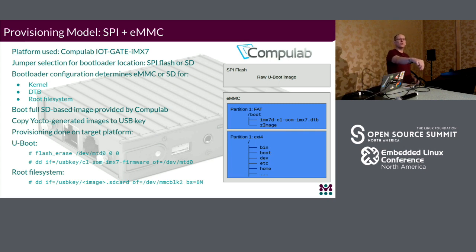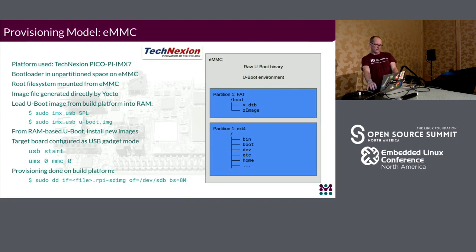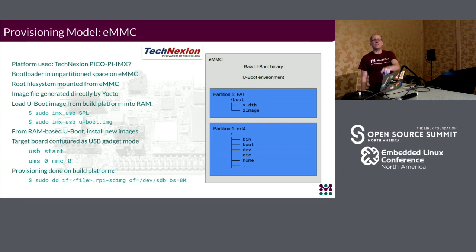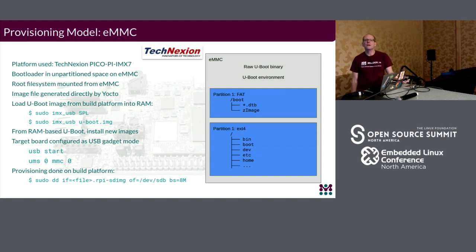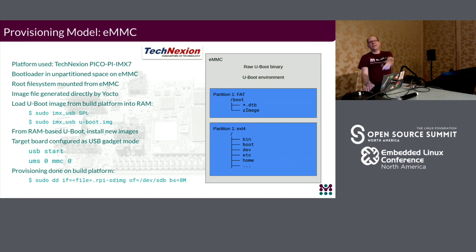For this one there's actually a jumper on the board. All the jumper does on this particular board is select whether it's going to load the bootloader out of SPI flash. I think by default if there's not a bootable image in the eMMC, that's the default. Presumably there's a switch or a jumper. And there may be examples where the UMS command is similar because that's what's actually putting you into USB mass storage mode.